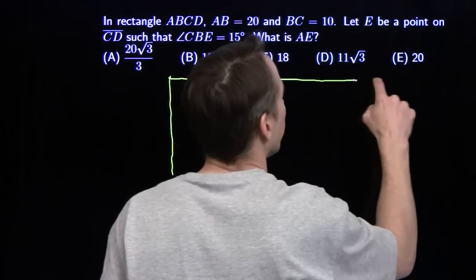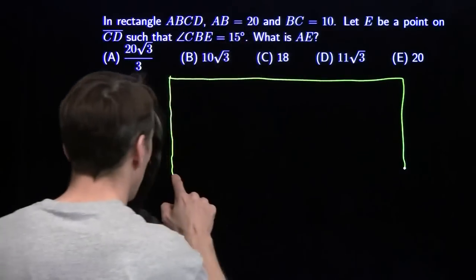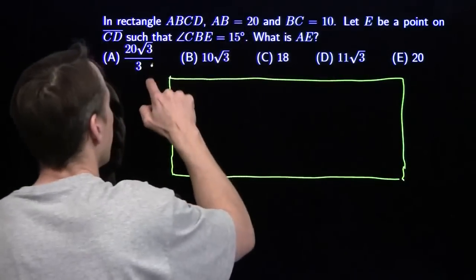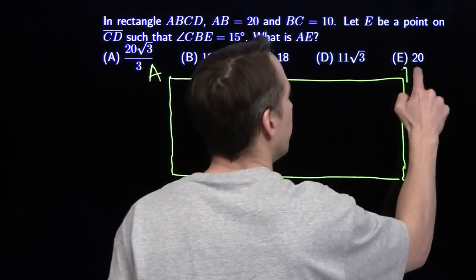Long side is twice as long as the short side. There we go. We've got A, B.